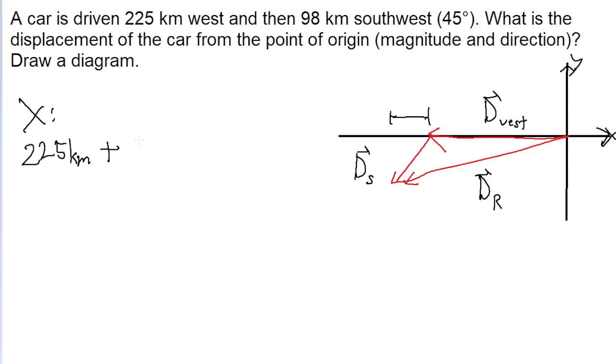When we have something that's angled and we're looking for the x component, we take the magnitude of the vector, 98 kilometers, and multiply it by the cosine of the angle it's at, which is 45 degrees. So if we put that into a calculator, we find that the horizontal displacement is 294.3 kilometers.